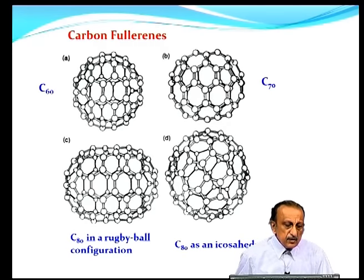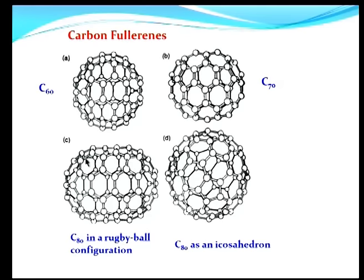Fullerenes first: C60, C70, and polymorphs of C80 — one in a so-called rugby ball configuration, the other in an icosahedron configuration. These are all macromolecules of carbon with the respective number of atoms. C60 has the surprising property that if a metal sits at the center of this C60 shell, it becomes a superconductor.